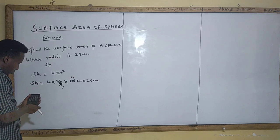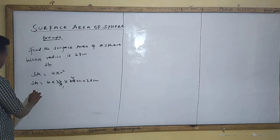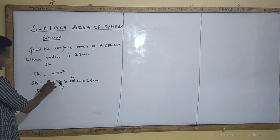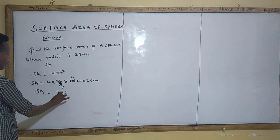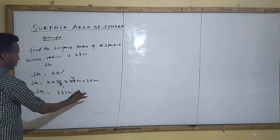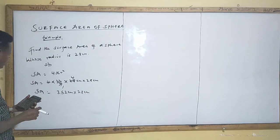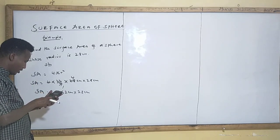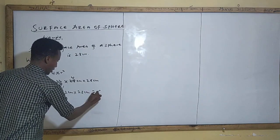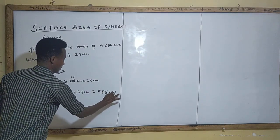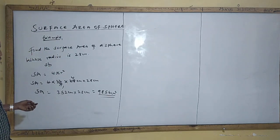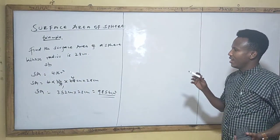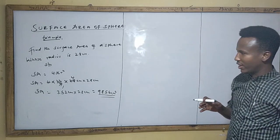Using a calculator, SA therefore is equal to four times 22/7, which gives 88/7. Then 88 times — wait, let me work this: 88 times 4 is 352, times 28 centimeter, so 352 times 28. That gives us the surface area. Remember: 88 times 4 is 352. That's how you get the surface area of a sphere, which has the formula 4πr². Don't forget this formula.